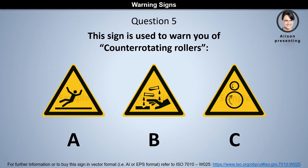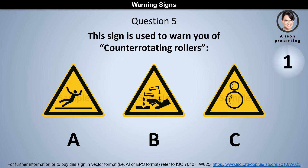Question 5. This sign is used to warn you of counter-rotating rollers. Is it A, B, or C? The answer is C.